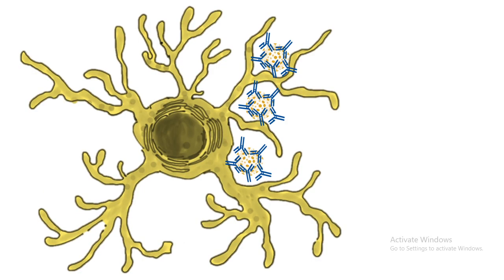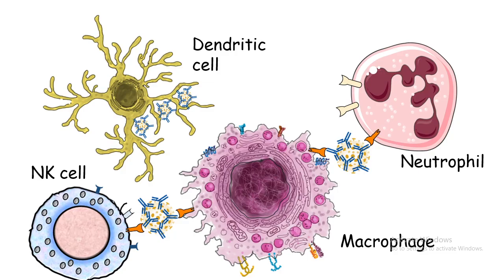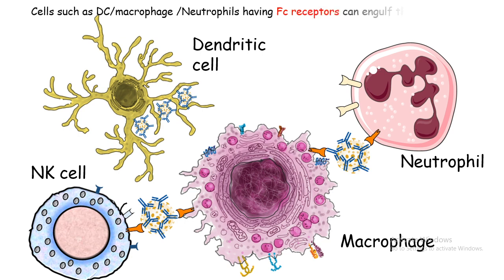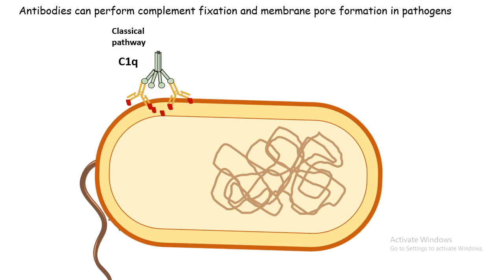Another mechanism involves opsonized pathogens — for example, a virus coated with antibodies can be taken up by several cells such as dendritic cells via phagocytosis. Other cells with Fc receptors, which bind to the Fc region or tail of the antibody, can also perform endocytosis of the entire opsonized pathogen. This includes neutrophils, macrophages, NK cells, and dendritic cells, all of which can neutralize the threat.